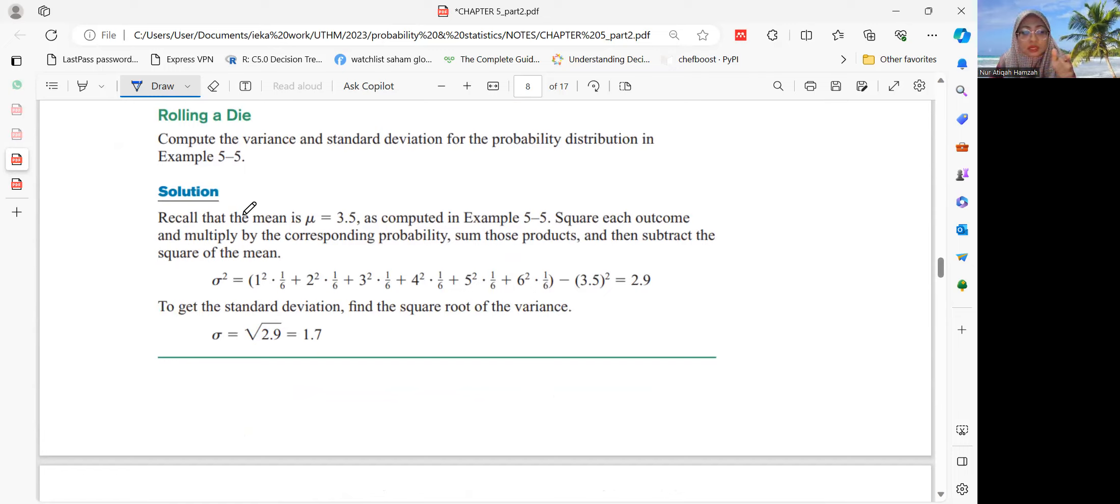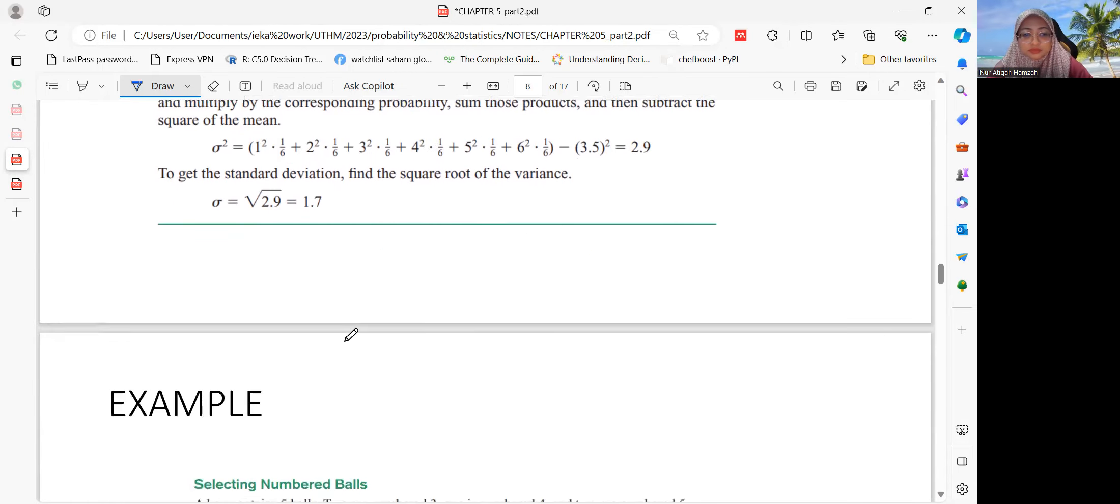So x squared. Here, 1 squared times 1 over 6 plus 2 squared times 1 over 6, and you have to total up this value and then minus with the mu squared. So we got the value is 2.9. And then the standard deviation is the square root of the variance. Square root of 2.9 is 1.7.